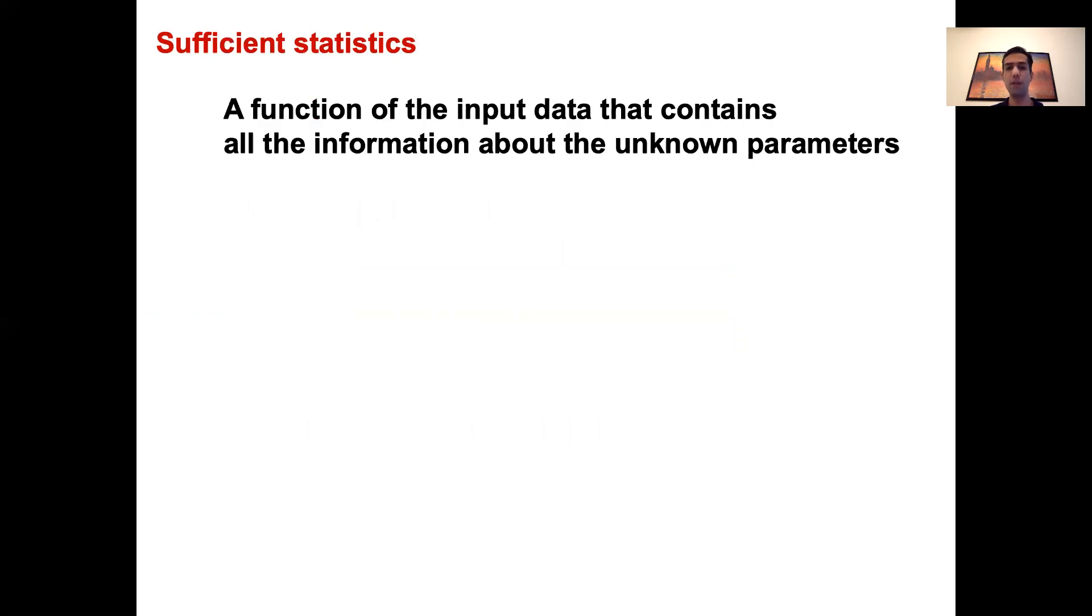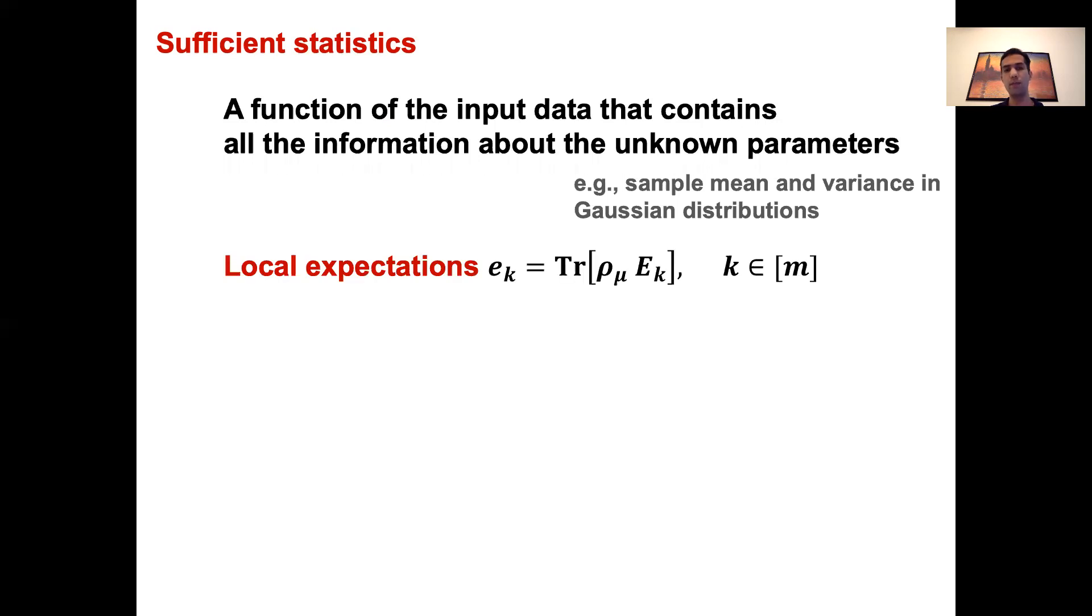The first ingredient is the concept of sufficient statistics, which is a function of the input data that contains all the information about the unknown parameters. For example, for Gaussian distributions, the sample mean and variance of the data are sufficient statistics for learning the distribution. This notion can be also generalized to the quantum setting. So suppose we have access to identical copies of the quantum Gibbs state. It turns out that there are certain measurements that we can perform on these copies whose outcomes contain all the relevant information for learning the Gibbs state or its Hamiltonian.